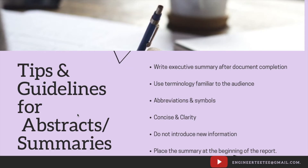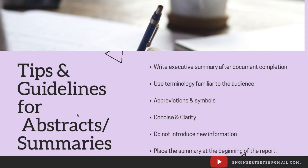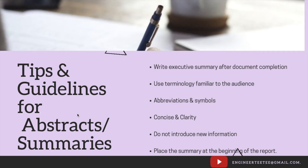It's also important to use terminology that is familiar to the audience — you don't want to use terminology that the audience cannot connect with. Also be mindful of abbreviations and symbols. If you use any abbreviations, ensure they are written out in full before using them in the abstract or summary. Any symbols — for example, temperature T or pressure P — should convey the right message to the reader.